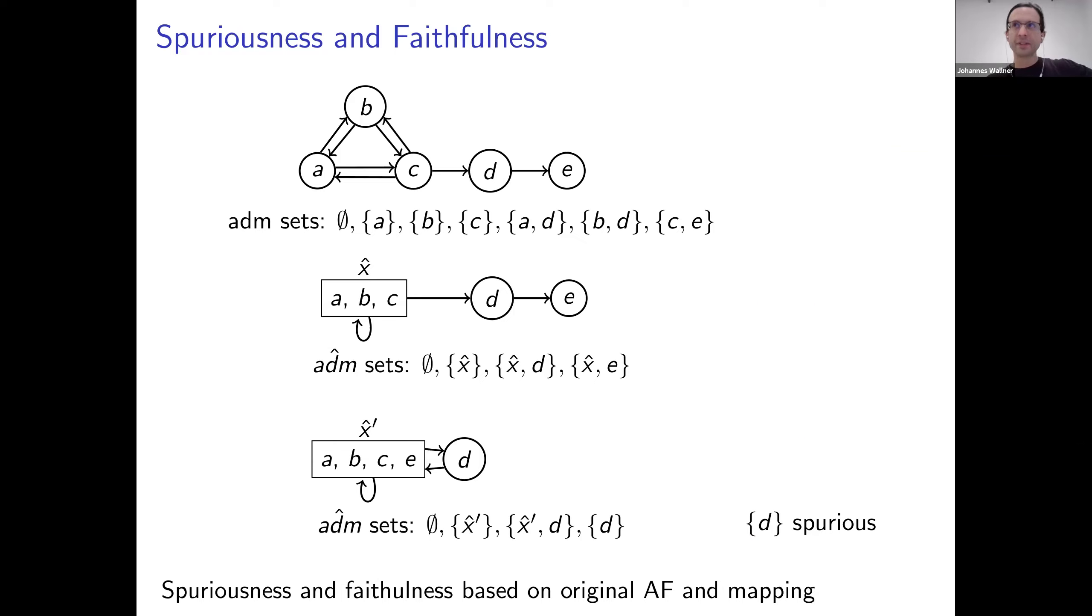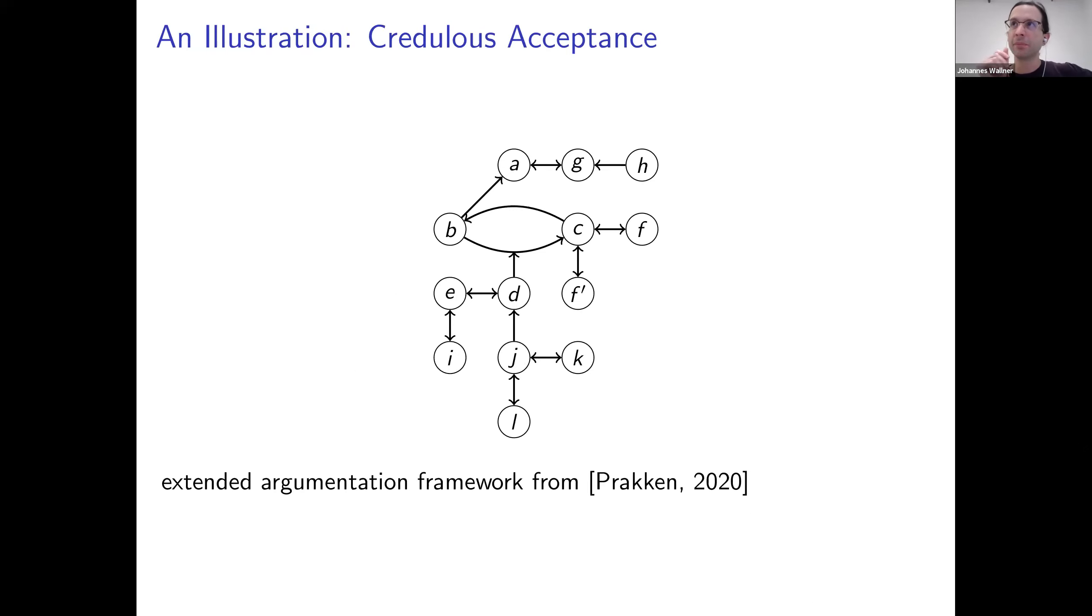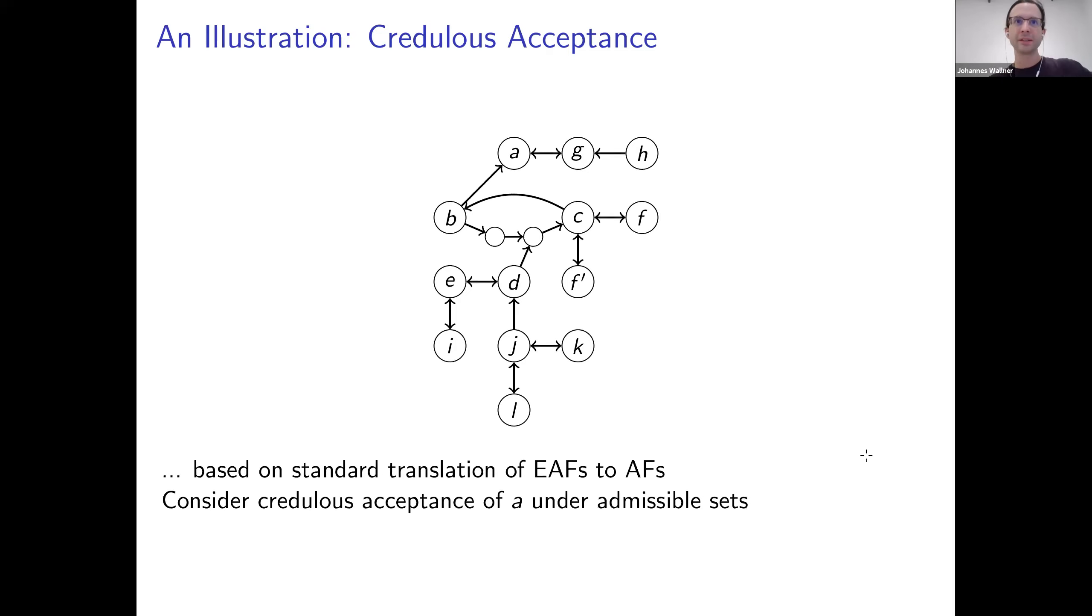Now since this is a rather short talk, I want to spend some time on illustration. What can you actually do with such an abstraction? What is the use case here? We'll focus on credulous acceptance of arguments. For skeptical reasoning it's actually a bit different, but for that come to the poster or talk to me or look at the paper. But for the credulous case, I just took an example from the literature, an example by Prakken regarding some criminal case. He actually defined an extended argumentation framework, but I applied the direct translation to obtain one. I just want to illustrate the concept here. So let's say we actually want to consider the credulous acceptance of the argument S here. The argument S is credulously accepted.